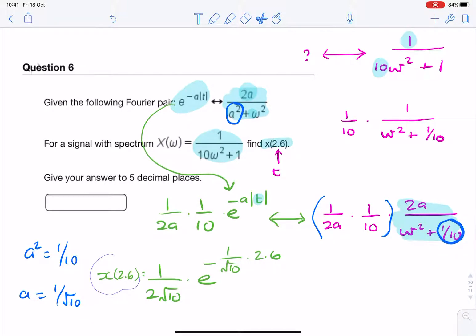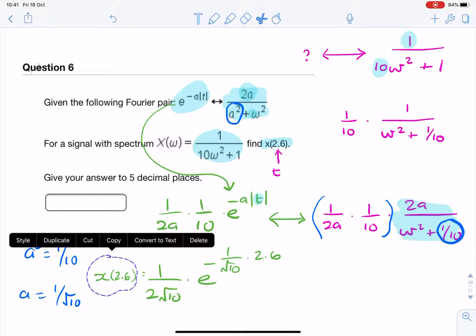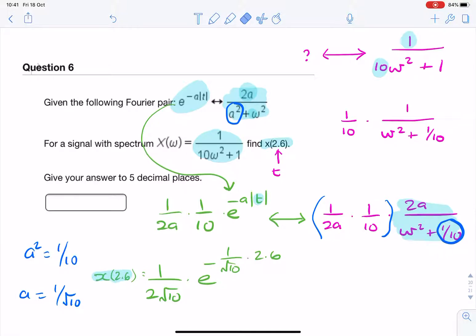So the question is asking us to find the time domain value x of 2.6. We did that by finding the inverse Fourier transform using the pair, the Fourier pair we were given. So this bit here, this is what we were given in the question in the Fourier pair, and this is the coefficient that we evaluated here.